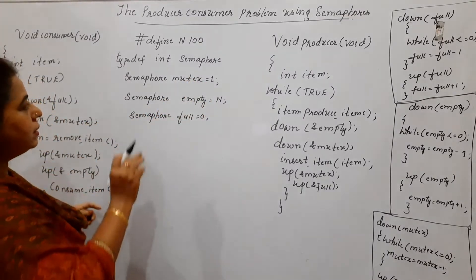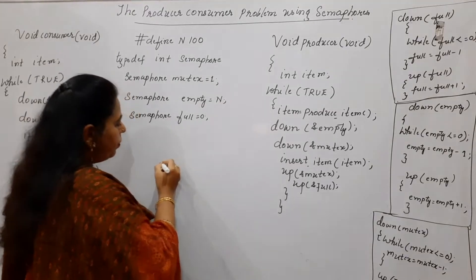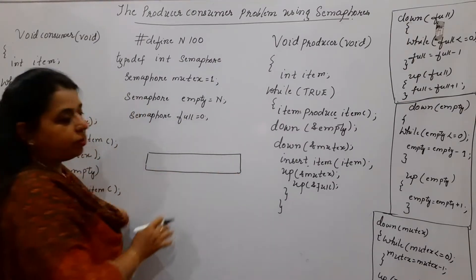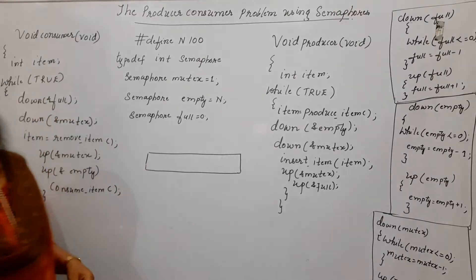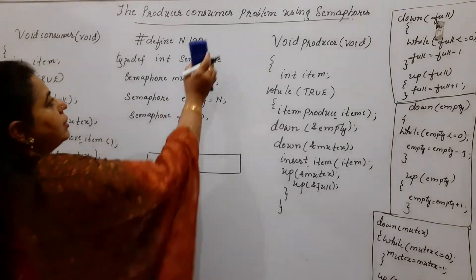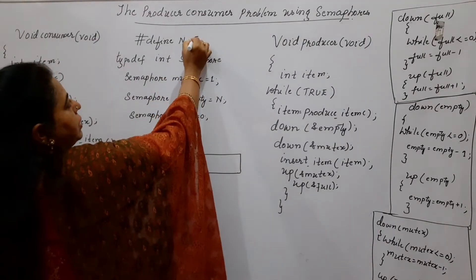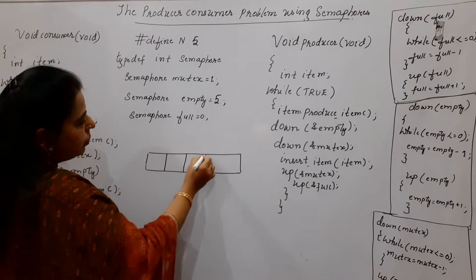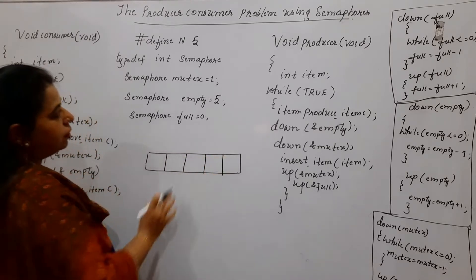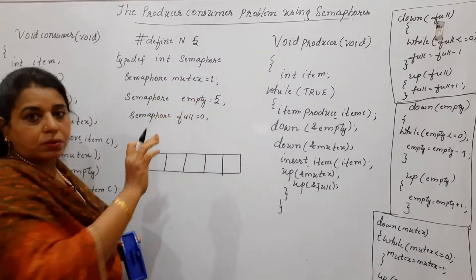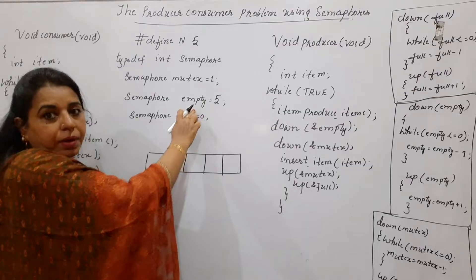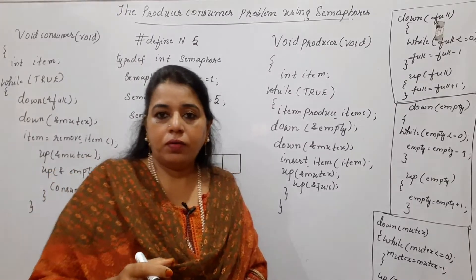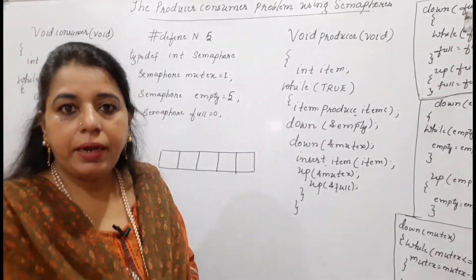We initialize values for all three semaphores. Recalling the producer-consumer problem, the producer tries to produce items in a buffer. I have taken five locations in the buffer. The author normally gives the value for number of slots as 100, but I will change it to five. Mutex is used to access the critical region, empty semaphore counts the number of empty slots, and full semaphore counts the number of filled slots.